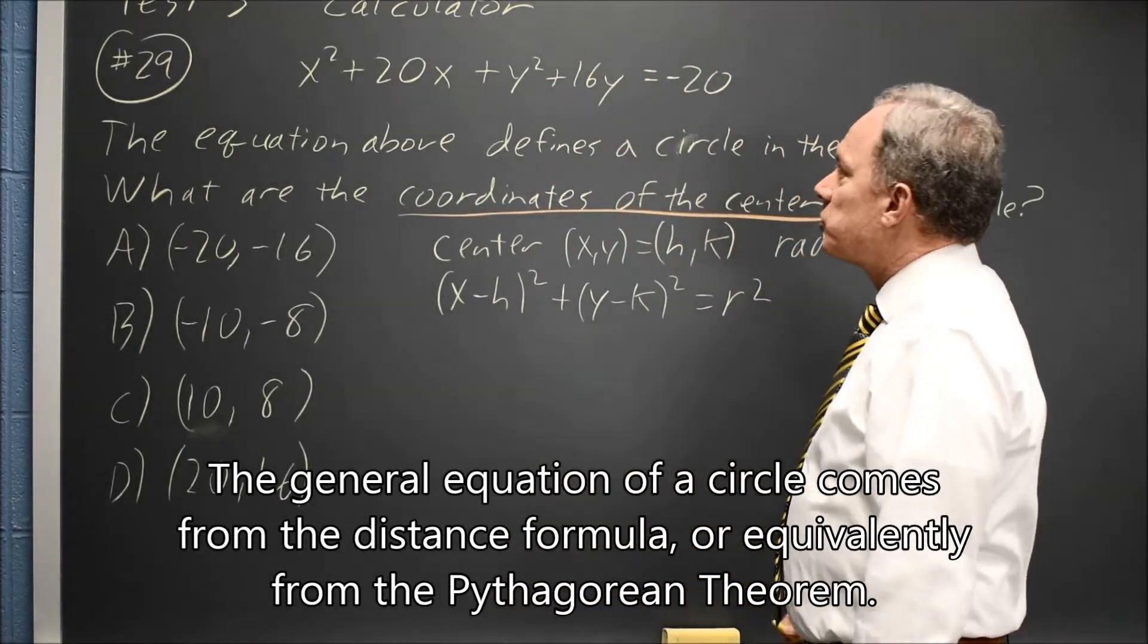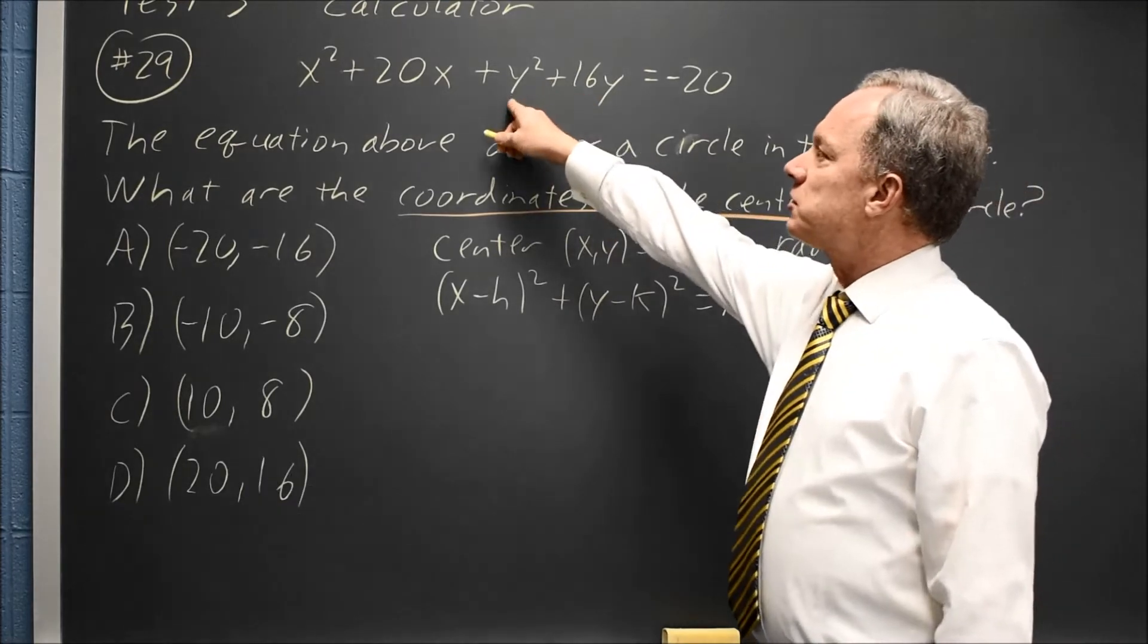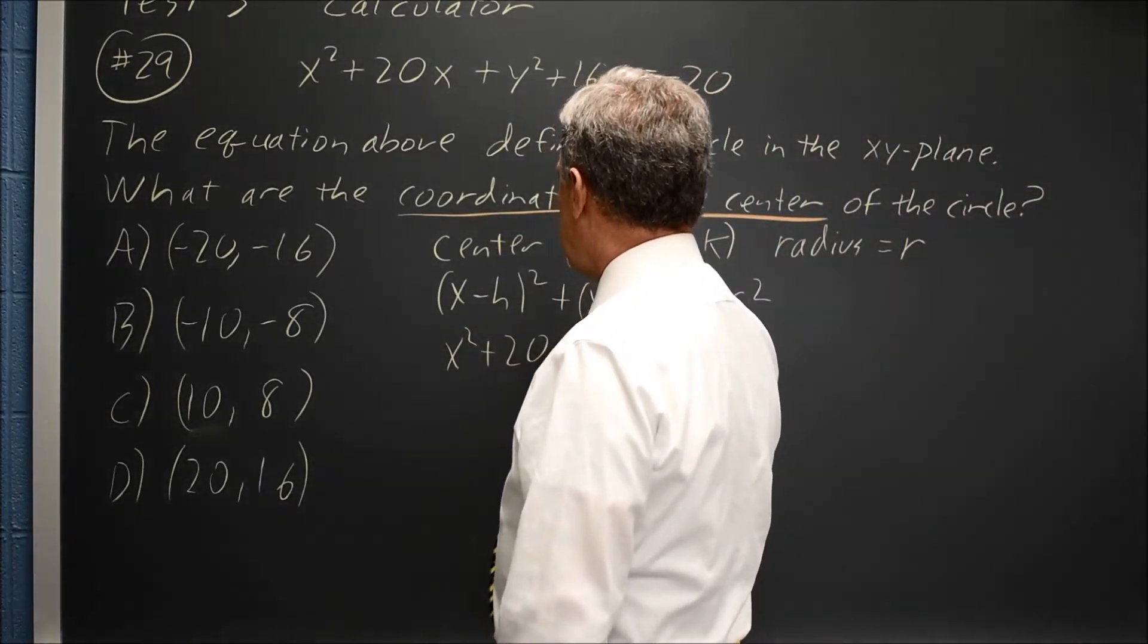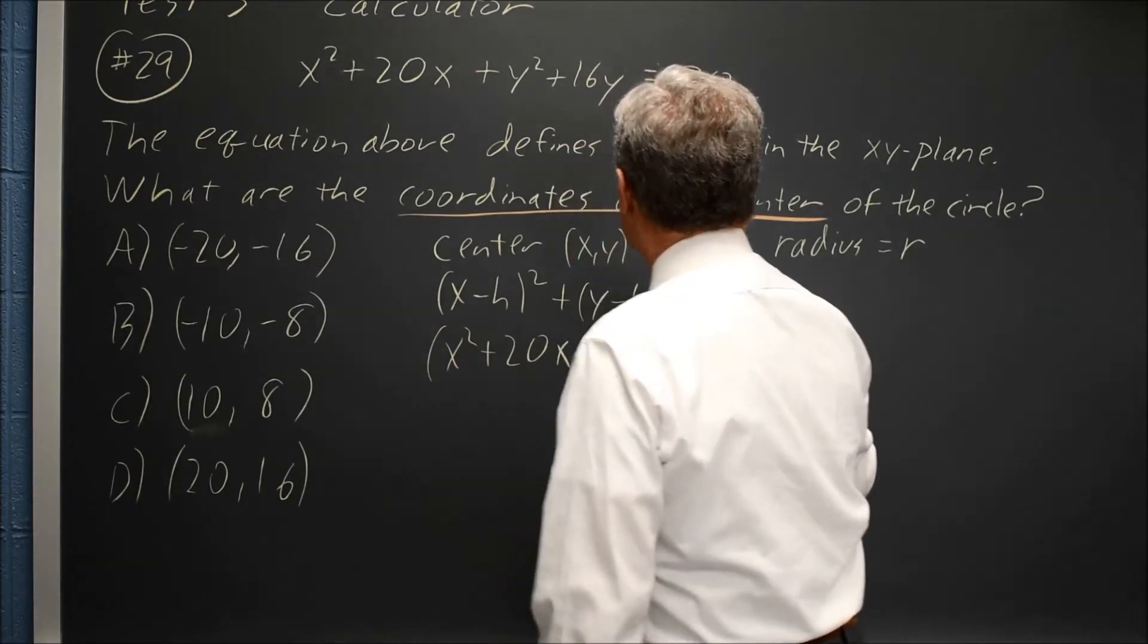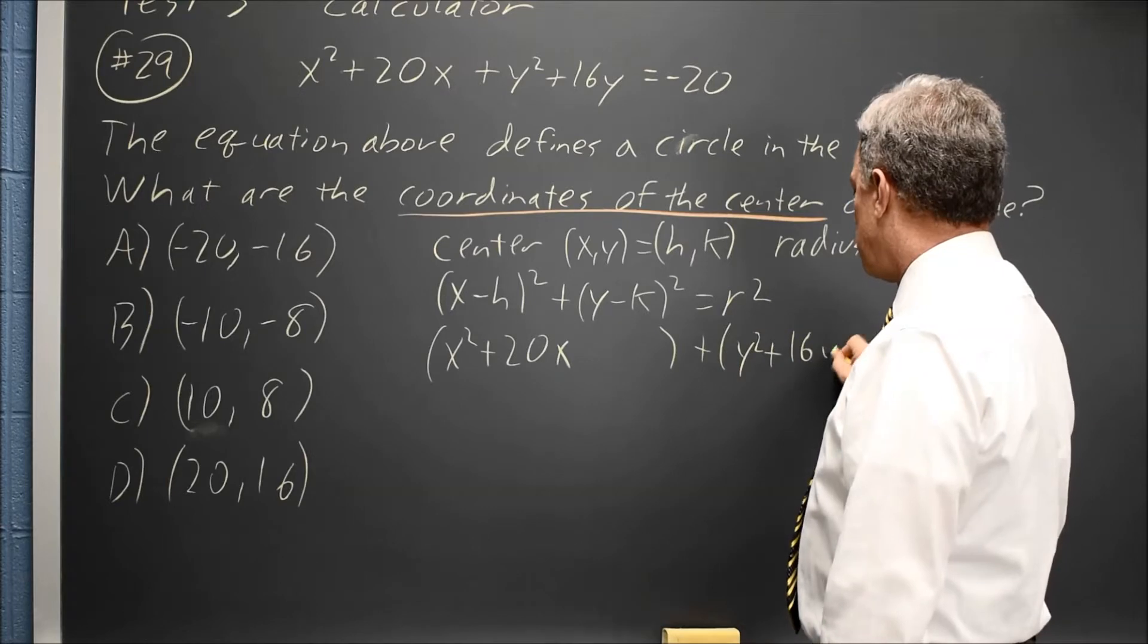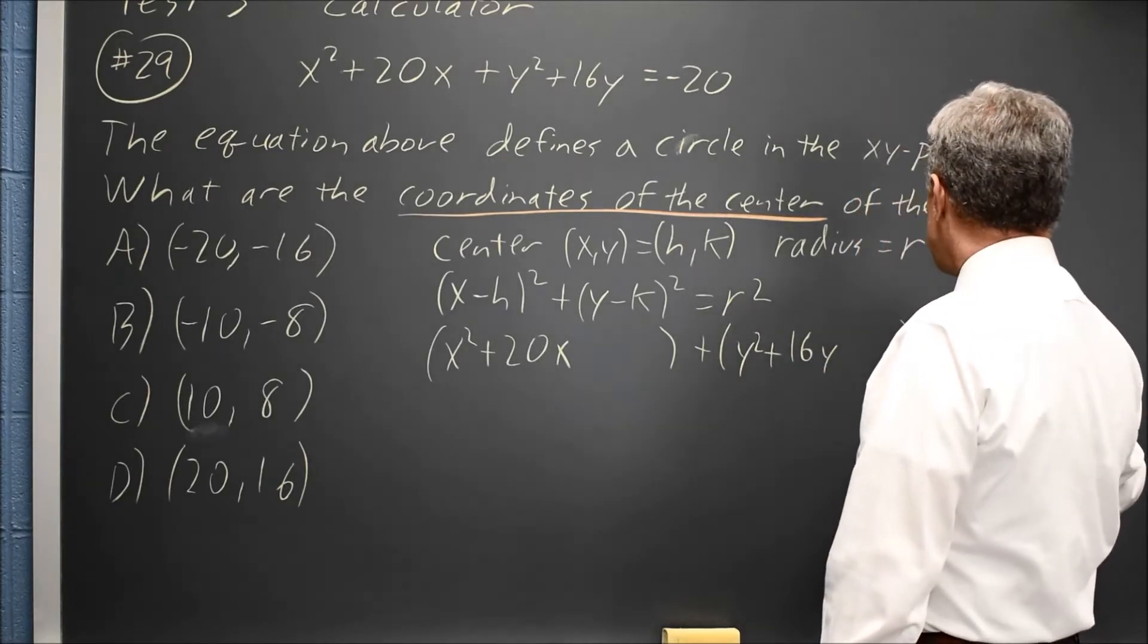So I'm going to have to complete the square. x² + 20x, leave a space, plus y² + 16y, leave a space, equals -20.